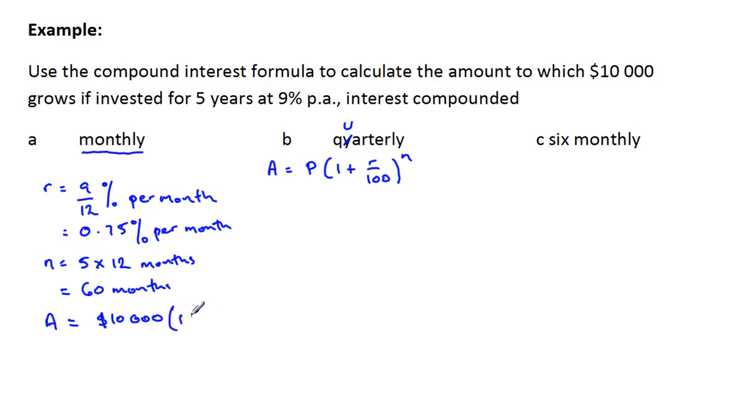And so our final answer, A, the amount, would be our amount invested $10,000, and in our brackets we've got one plus our interest rate 0.75 per month over 100, and our number of years is still five but because we receive payment each month our payment period is totally 60 payment periods. So let's finish this off. $10,000 times 1.0075 to the power of 60, and our final answer is $15,656.81.